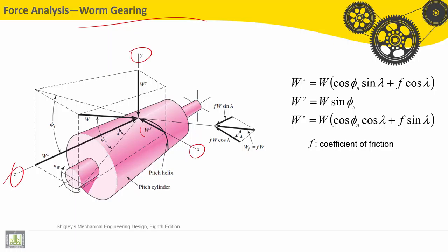Along X axis, we find Wx, Wy along Y axis, and Wz along Z axis. W is the total or resultant force.